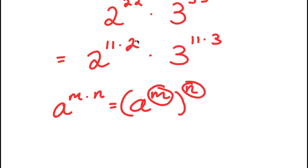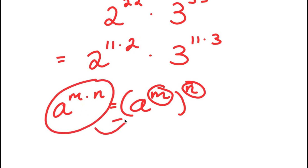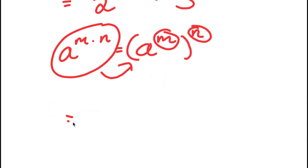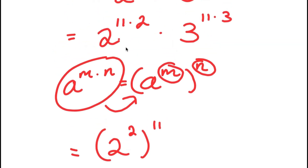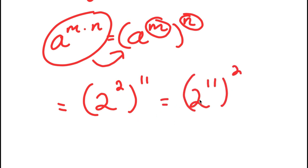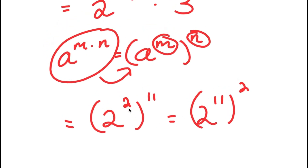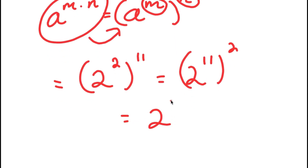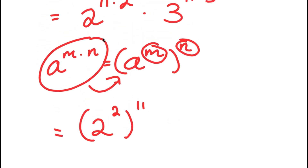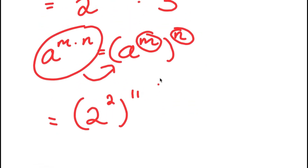So 2 to the power of 11 times 2 — I'm going to take that form and rewrite it as 2 to the power of 2 to the power of 11. Remember, this is also the same as 2 to the power of 11 to the power of 2, because both equal 2 to the power of 2 times 11. So I'm going to rewrite this as 2 to the power of 2 to the power of 11, times 3 to the power of 3 to the power of 11.